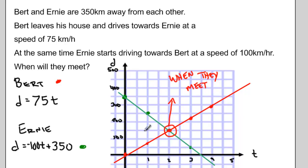This is when they meet. When the two graphs are crossing, that's when Bert and Ernie are the same distance away from Bert's house, and therefore they're meeting. We can see they meet at the two hour mark, or when they are 150 kilometers from Bert's house.